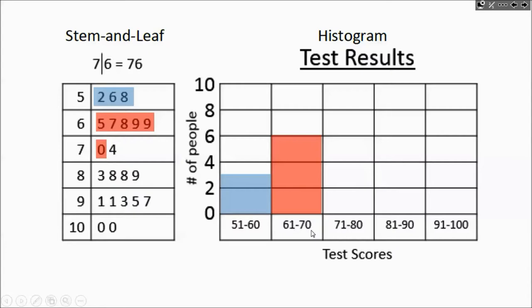Next we have the 71 to 80 range and well there's this one in the 71 to 80 range, nothing over here. So we're just going to have one. So that's going to be halfway, half of the first box, half of one box because one box represents two people.